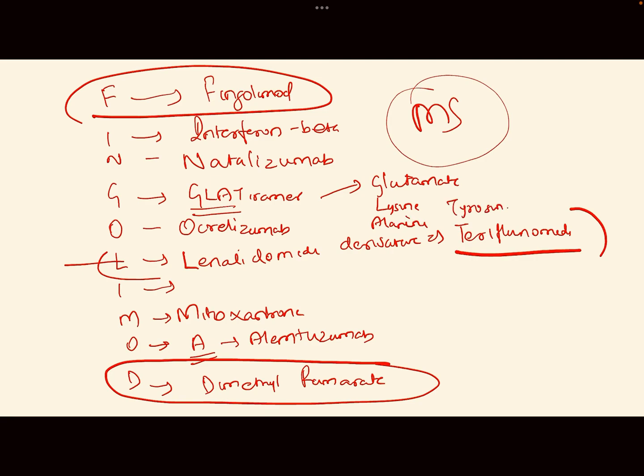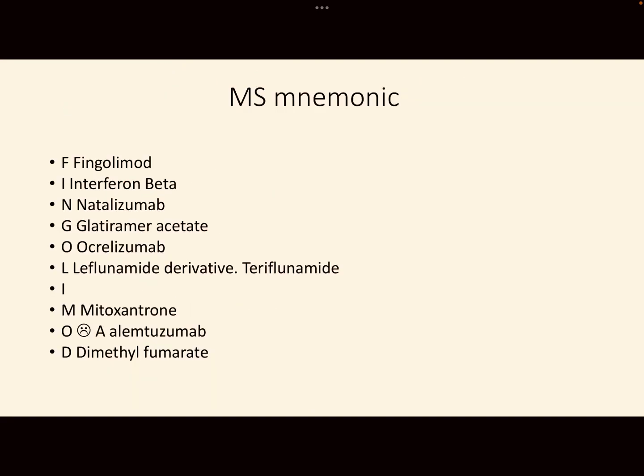And for glatiramer, it's also a mnemonic in itself. It consists of glutamate, lysine, alanine, and tyrosine. So that's it, this is the mnemonic. Thank you.